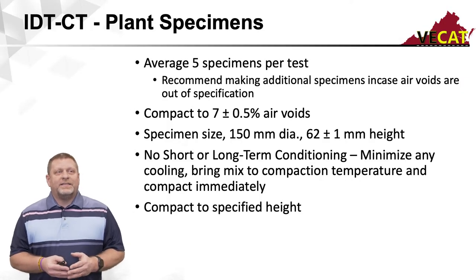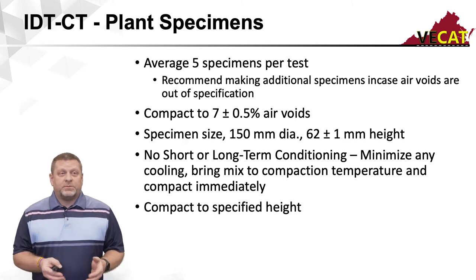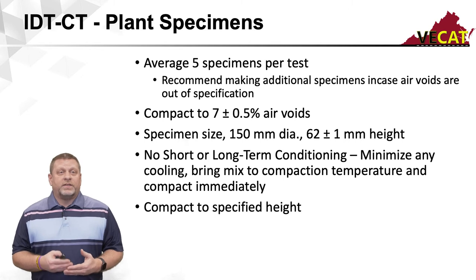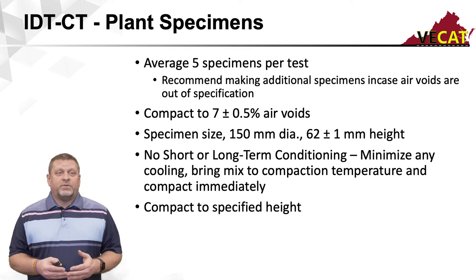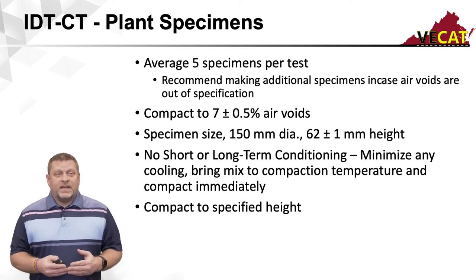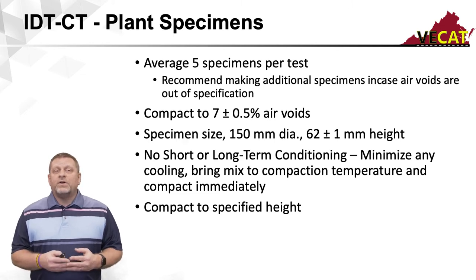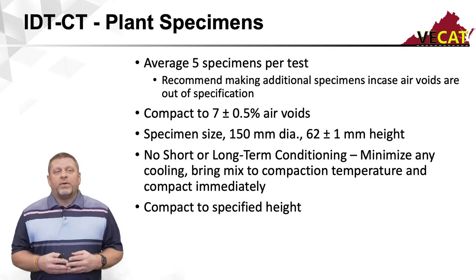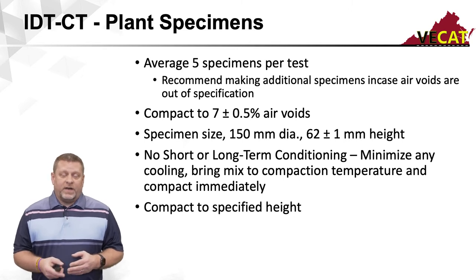Now let's talk about the IDT-CT plant specimens. We've already mentioned it takes a minimum of five specimens per test. Just as in the mix design, we highly recommend making a couple extra in case your voids are out of range. The void range is still 7 plus or minus 0.5%. Specimen size is the same — 150 millimeters, 62 millimeters in height. As far as conditioning, unlike the design phase, there is no conditioning. We want to bring these samples to compaction temperature as quickly as possible and compact to the specified height.